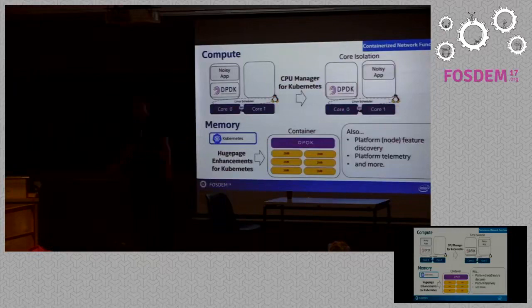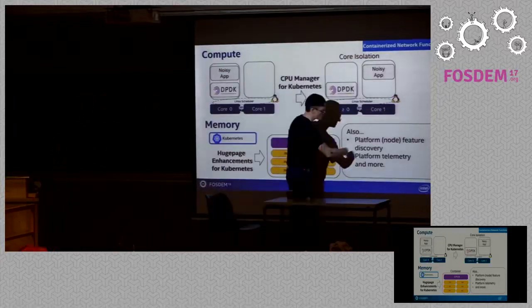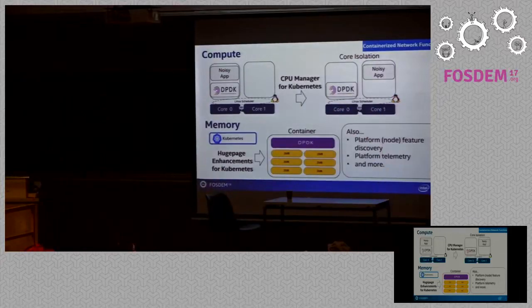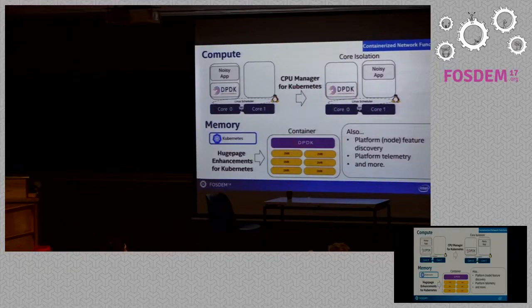We also built huge page enhancements for Kubernetes — a way to specify that your container requires huge pages because it's running DPDK, VPP, or a similar network function. And we built platform node feature discovery, which allows Kubernetes to place your container on a node that has specific features like AVX, AVX2, or certain security accelerators, by understanding which nodes have those capabilities.